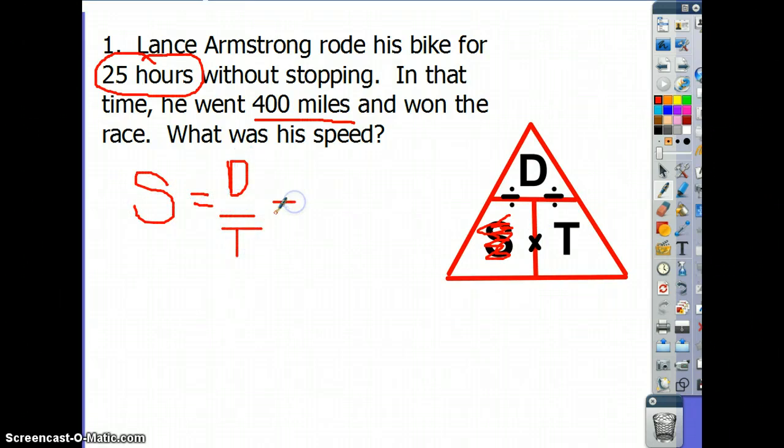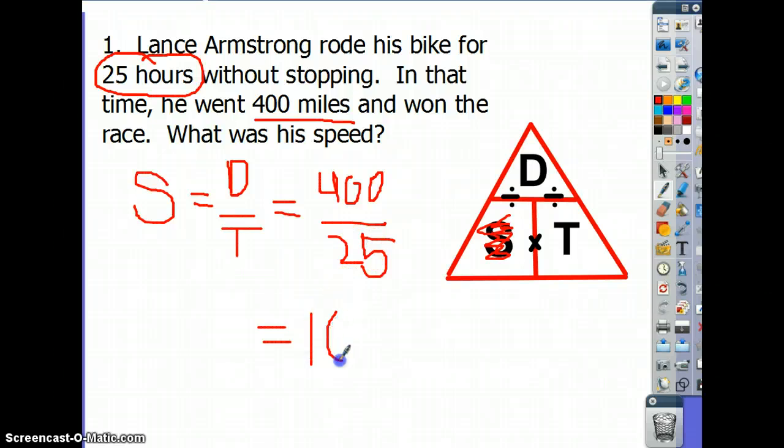And again, forgive my handwriting, because I'm doing this with my cursor. The distance that he went was 400 miles divided by the time, 25 hours. And I'm not including the unit just for the sake of time. If I show my work, which you're supposed to do, 400 divided by 25. 25 goes into 400 16 times, and now I have to go back to the unit. Miles per hour. You can write M-P-H. And here's your answer for number 1.